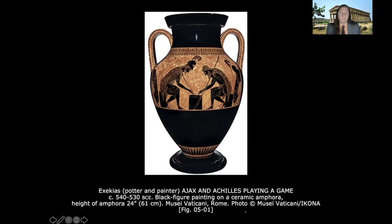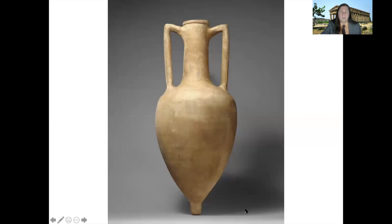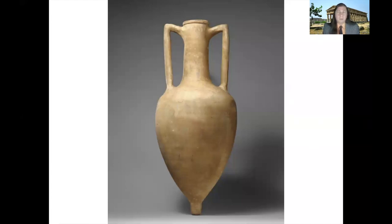On this amphora we can see two heroes from Greek epic poetry, Ajax and Achilles, who were fighting in the Trojan War. Here they're hanging out and playing a game. This scene would have been somewhat ironic for Greek viewers because they would have known that Achilles was going to be killed in the Trojan War and that Ajax would commit suicide due to grief for his lost comrade. So this moment of conviviality has a darker meaning underneath it.